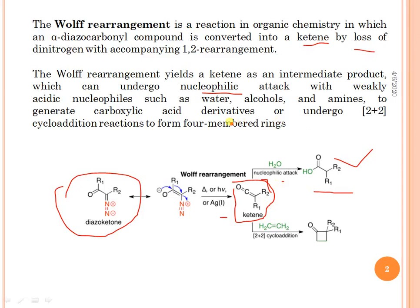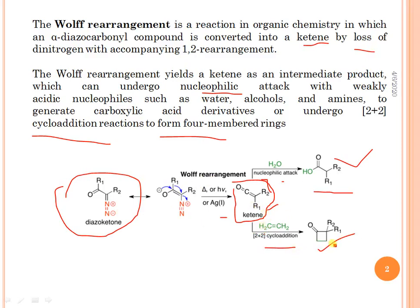The ketene generated in the Wolff rearrangement from the diazo ketone can also undergo cycloaddition reactions to form a four-membered ring system.